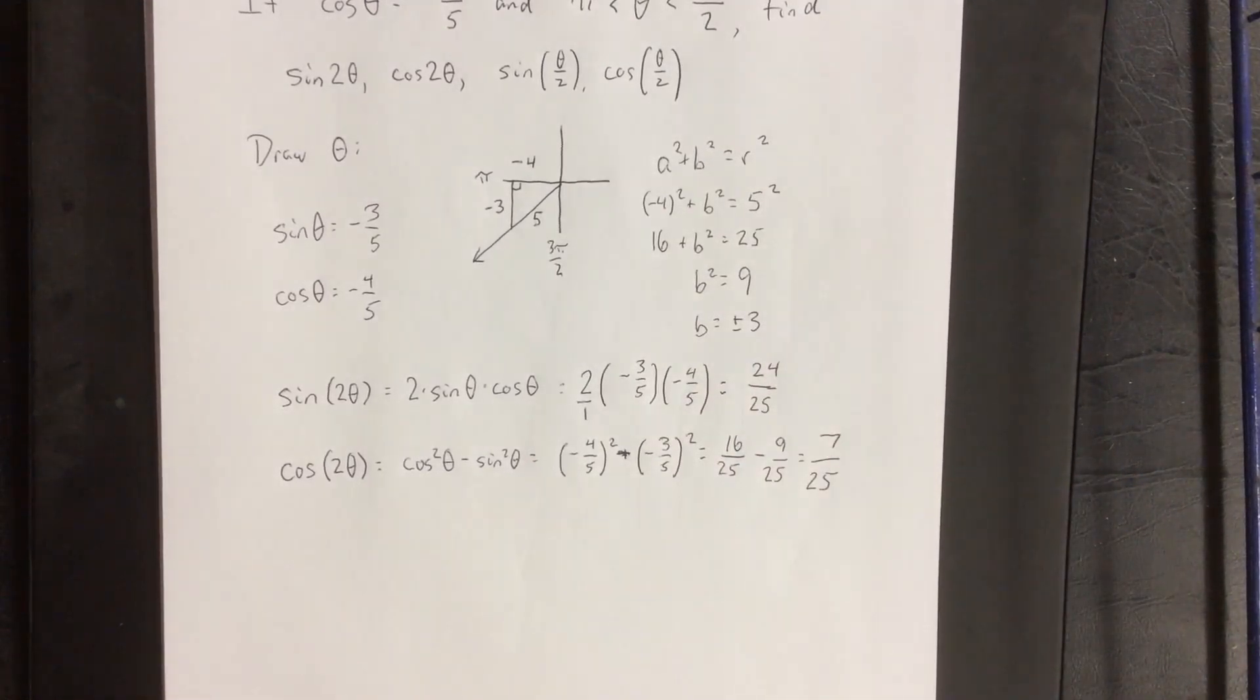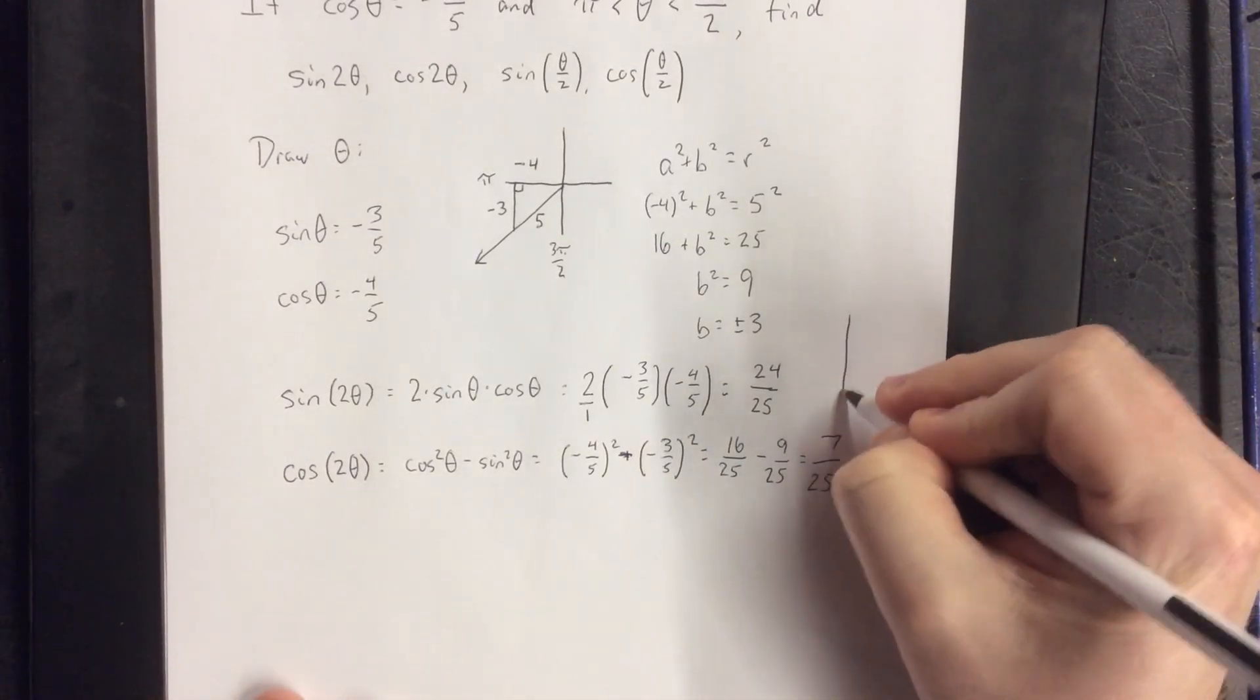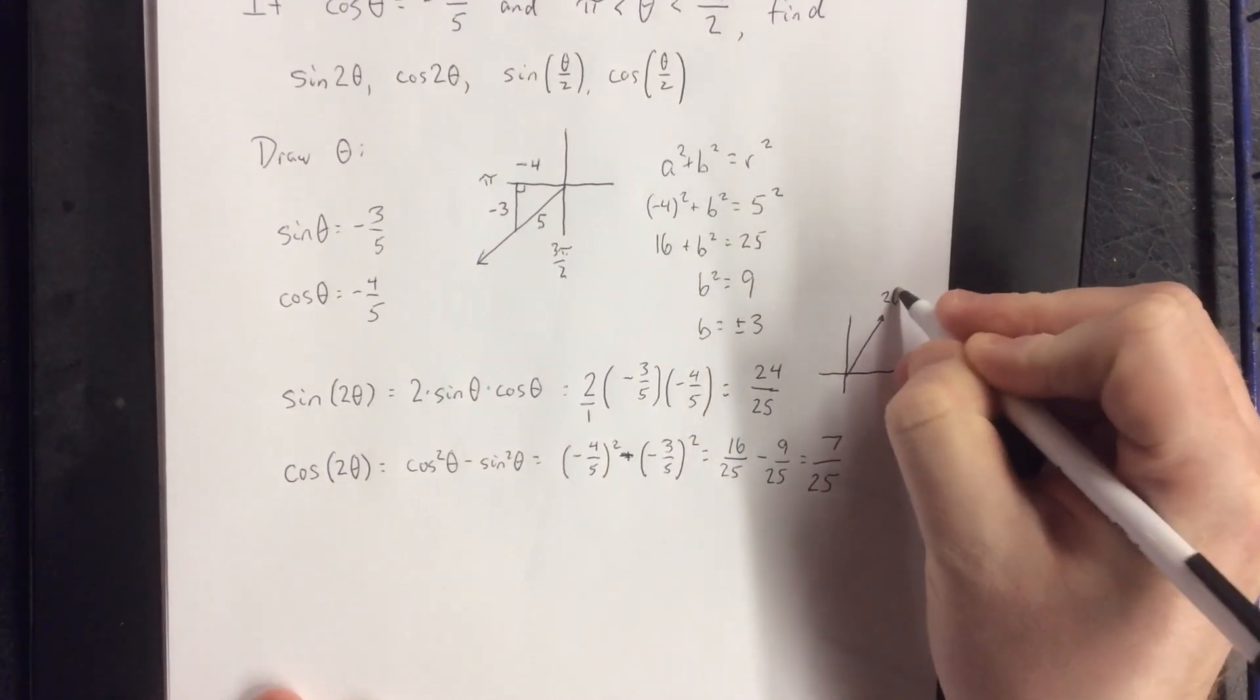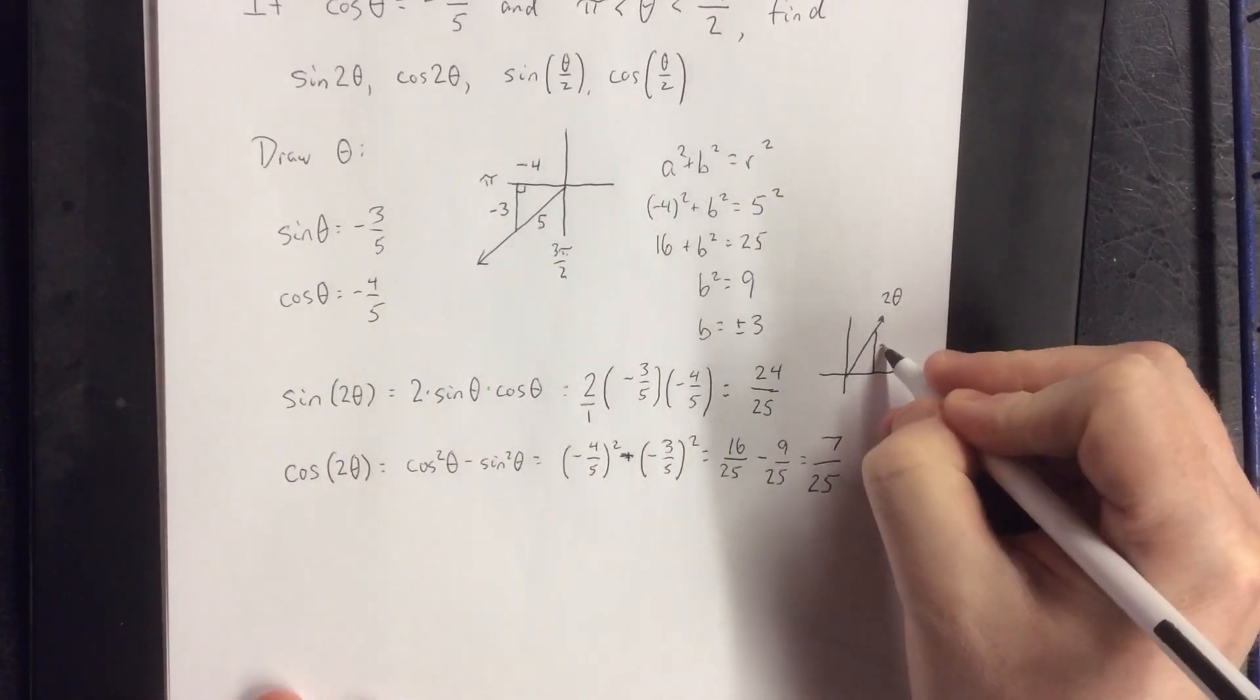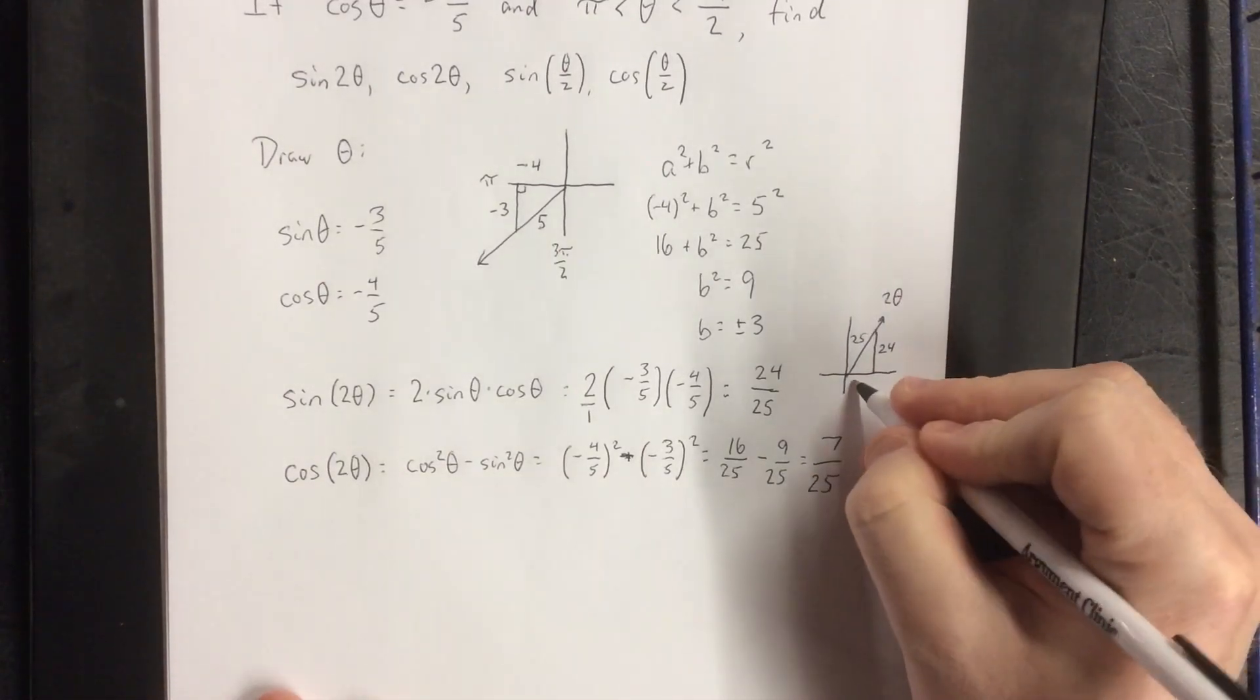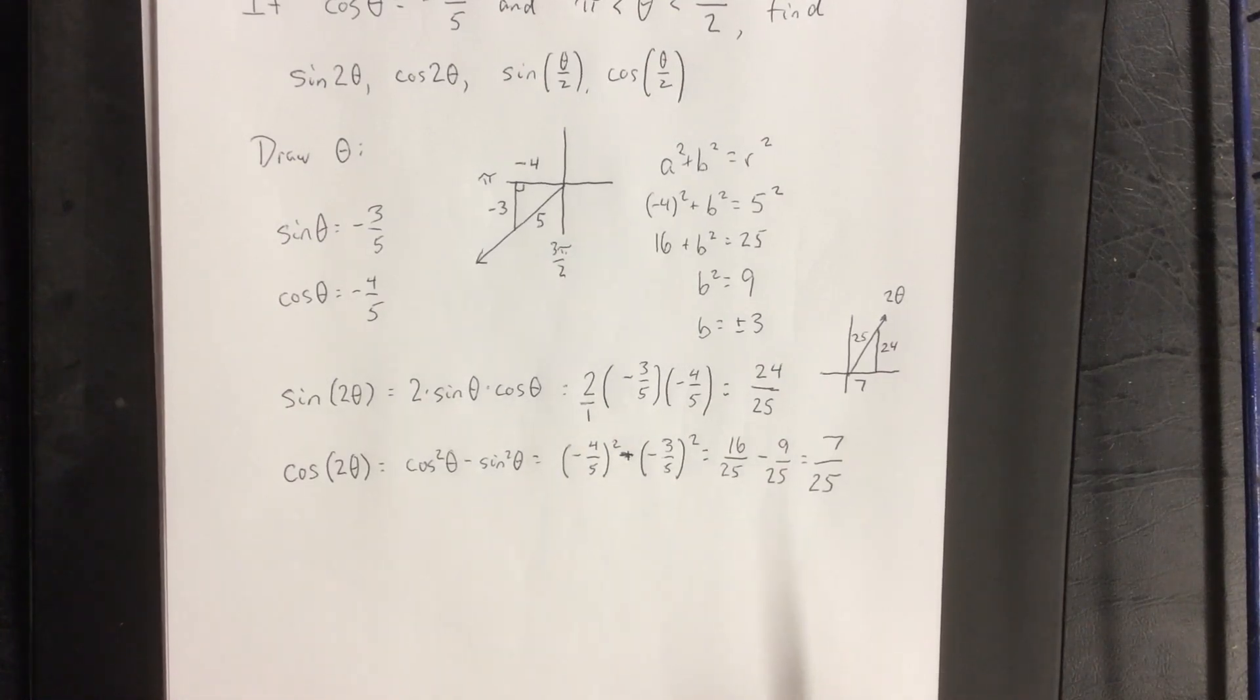Excuse me, those should be twenty-fives, not just fives. We're squaring them. Now, the other thing that this tells me is that for the double angle, because the cosine is positive and the sine is positive, that lets me know that 2θ is going to be a quadrant one angle. Opposite over hypotenuse would be twenty-four over twenty-five, and the adjacent over the hypotenuse would be seven over twenty-five. And as is typical, now that we have the sine and the cosine, if we wanted to find the tangent, that would be a piece of cake.